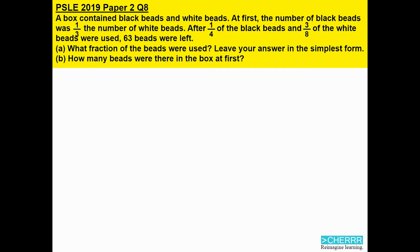PSLE 2019 Paper 2 Question 8. A box contains black beads and white beads. At first, the number of black beads was one-third the number of white beads. After one-quarter of the black beads and three-eighths of the white beads were used, 63 beads were left.